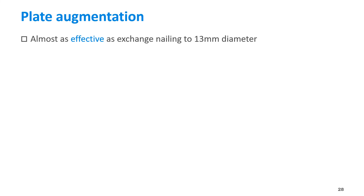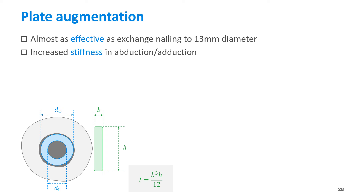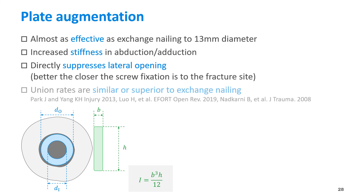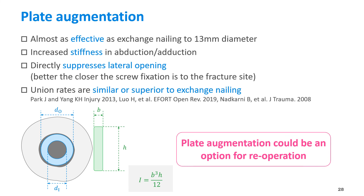For plate augmentation, the effect was equivalent to exchange nailing with a 13 mm diameter nail, which is 2 mm larger than the initial nail. This is likely because the plate also increases stiffness and directly suppresses the lateral opening. Some clinical reports have shown that plate augmentation is equal to or even superior to exchange nailing. This study has shown that plate augmentation can be an option for re-operation, even mechanically.